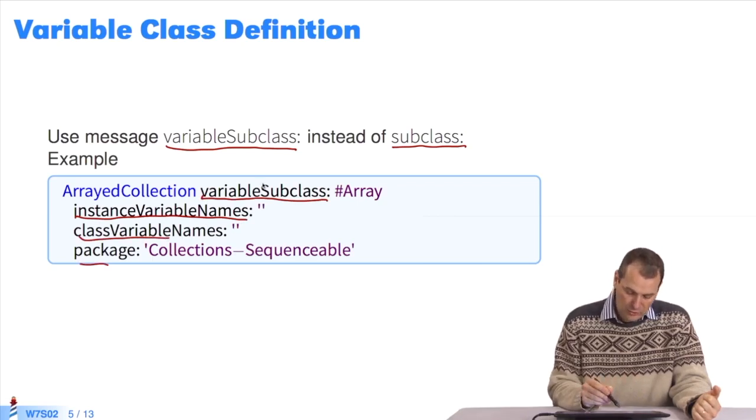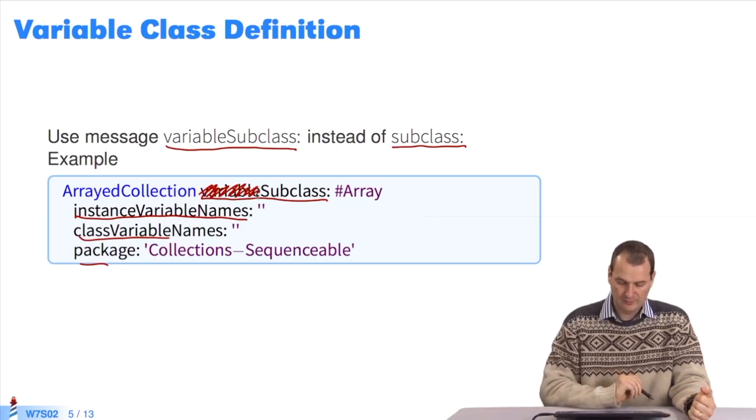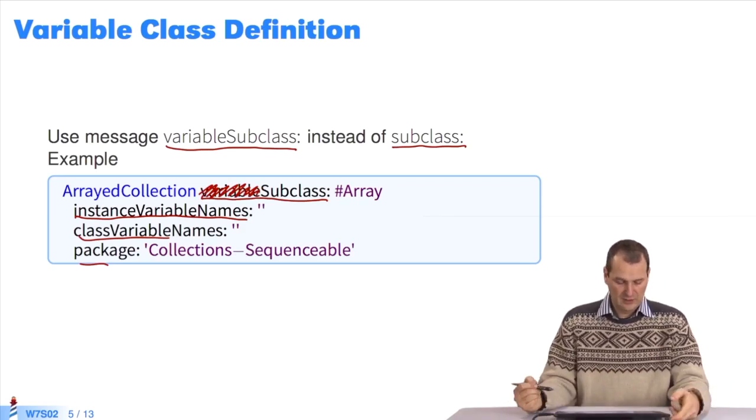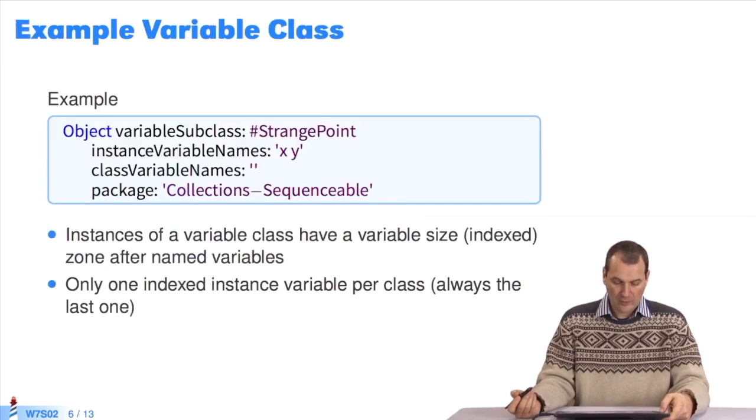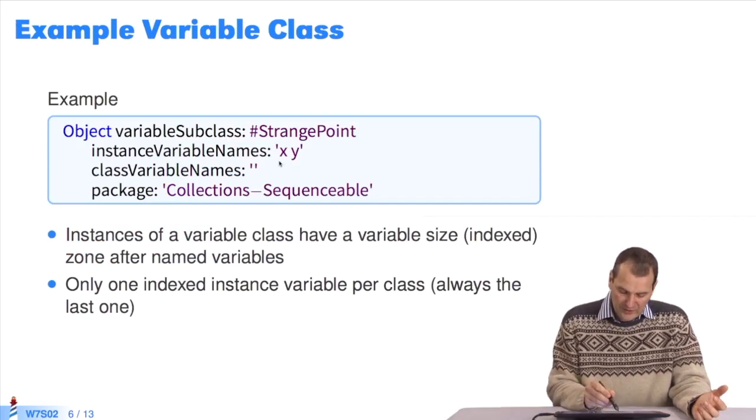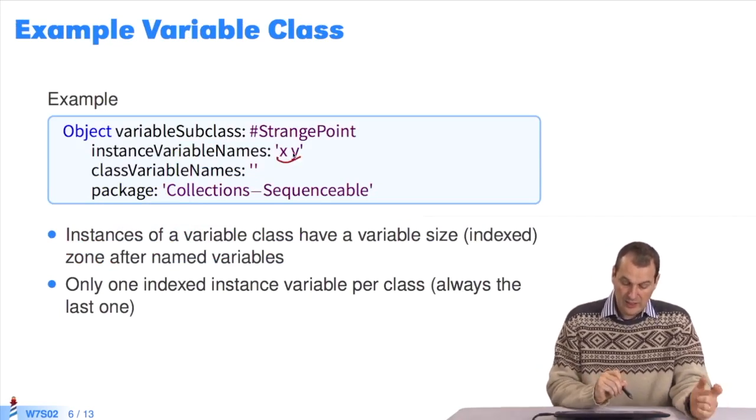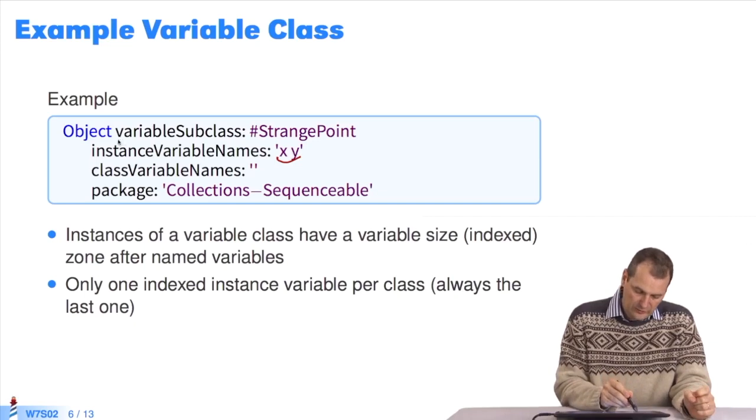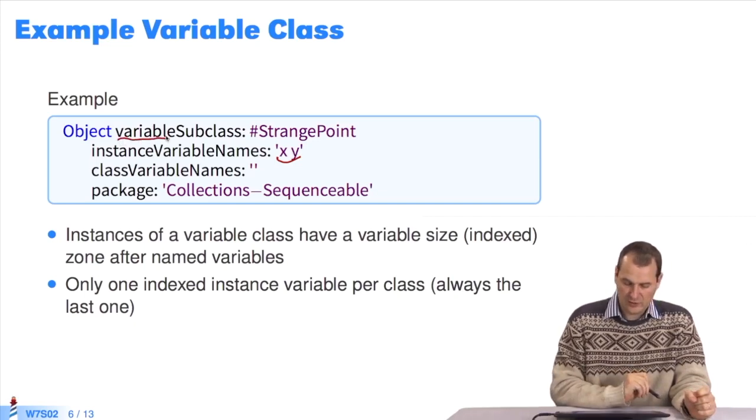Whereas usually, when we define the pointer class, counter class, or dice class, we would only use subclass. Using this definition, the instances we create have variable sizes. Using this example, if we want to make a strange point, using two instance variables, x and y, as a point and a variable zone, we use this definition.